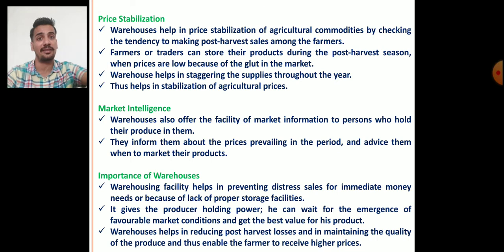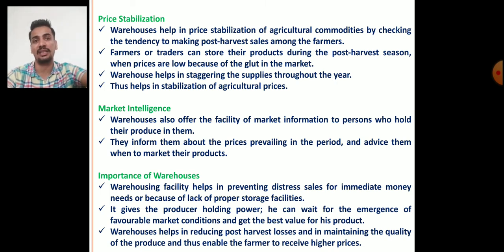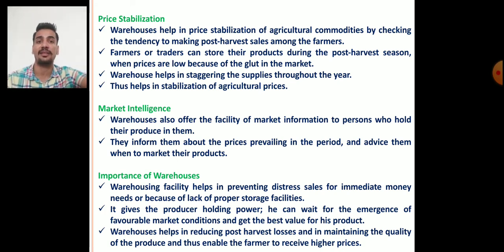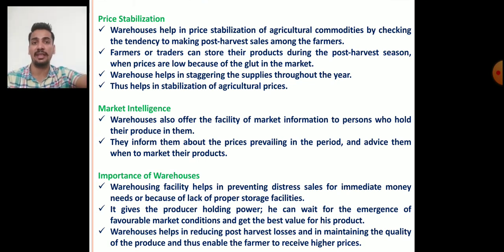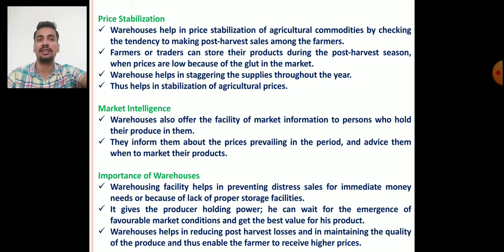Price stabilization: because of warehousing we can stabilize prices in the market. Warehouses help in price stabilization of agricultural commodities by checking the tendency to make post-harvest sales among farmers. Farmers or traders can store their produce during the post-harvest season when prices are low, and sell that produce in the future when prices are high, thus avoiding a glut in the markets.